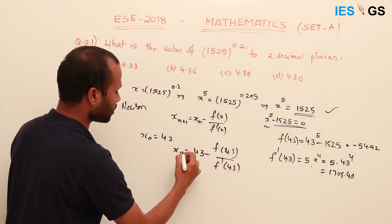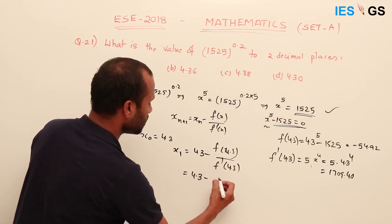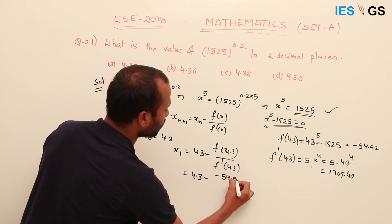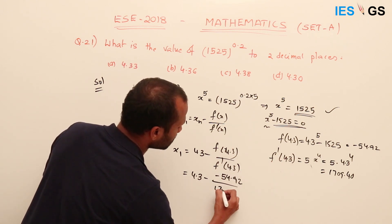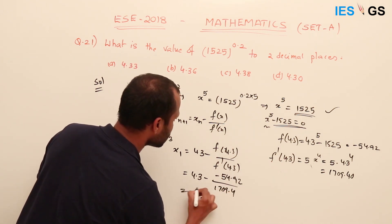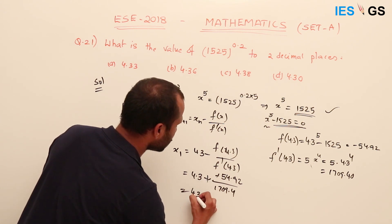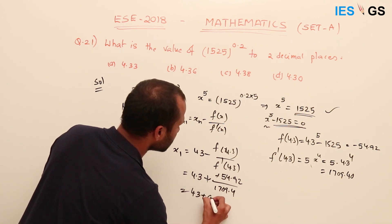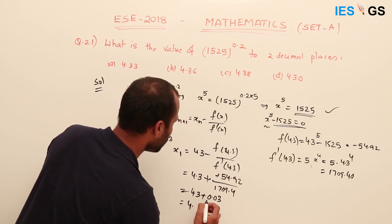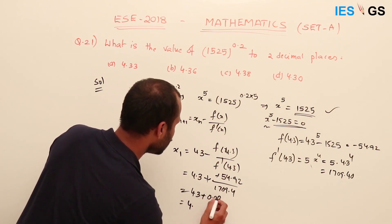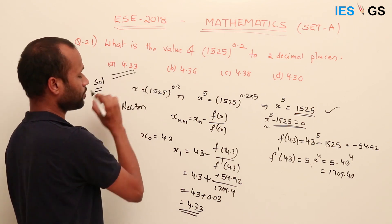Substituting: x₁ = 4.3 − (−54.92 / 1709.40) = 4.3 + 0.03 ≈ 4.33. So the answer is 4.33.